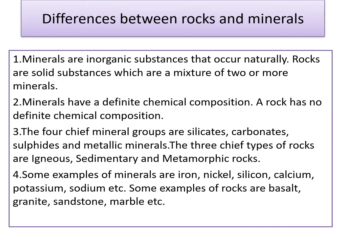Now let us understand the differences between rocks and minerals. Minerals are inorganic substances that occur naturally, but rocks are solid substances which are a mixture of two or more minerals. Minerals have a definite chemical composition but a rock has no definite chemical composition. The four chief mineral groups are silicates, carbonates, sulfides and metallic minerals.